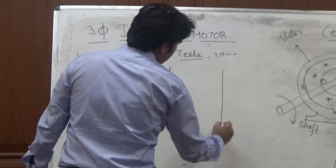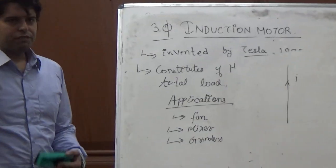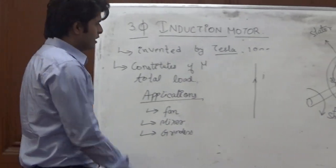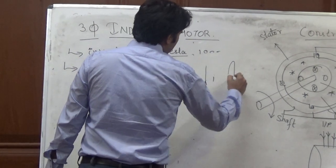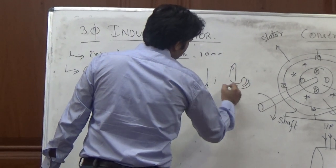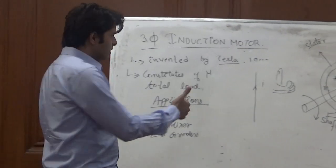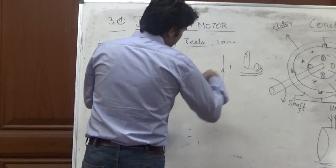Because wherever is the current, there is a magnetic field. Direction of which we can see by the right-hand thumb rule, which shows that thumb shows the direction of current, and the curls of our finger show the direction of the flux. If this is the current, the flux will be in this direction.